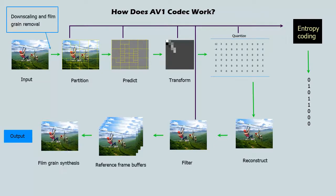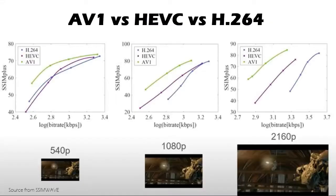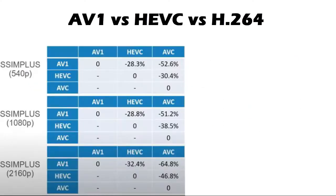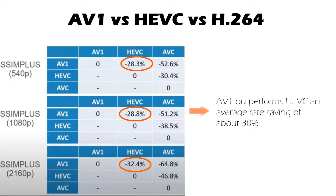AV1 adds steps to downscale the input and upscale in the middle of the filters. This not only makes AV1 superior to VP9, but also to the HEVC codec. According to a public test of more than 30 videos coded in AV1 LibAom and HEVC x265, AV1 outperforms HEVC with an average rate saving of about 30%.